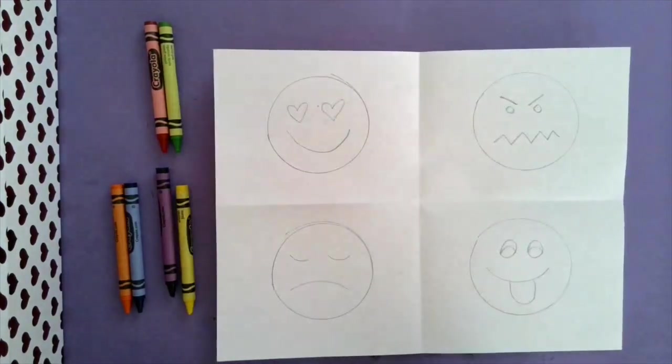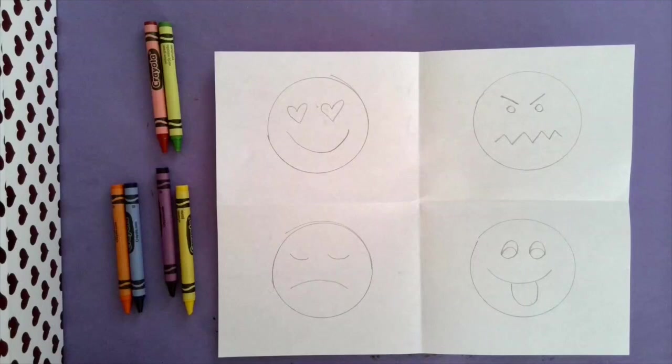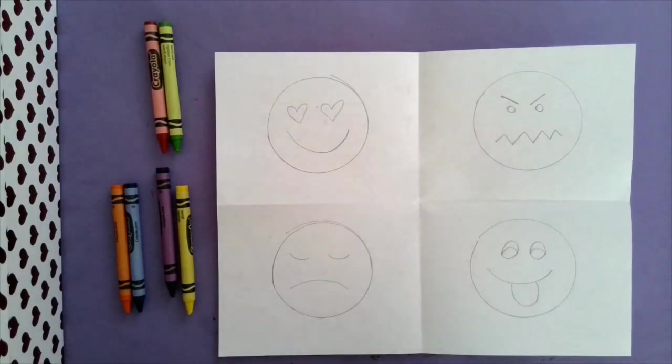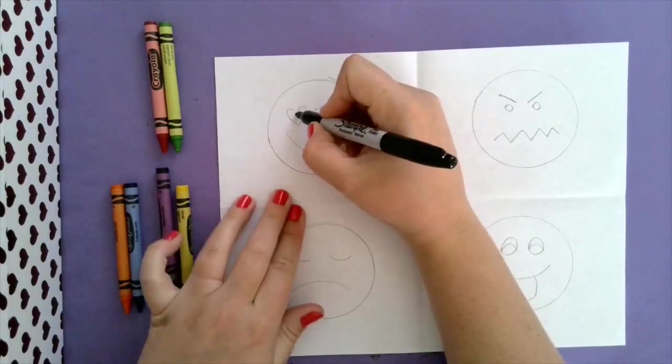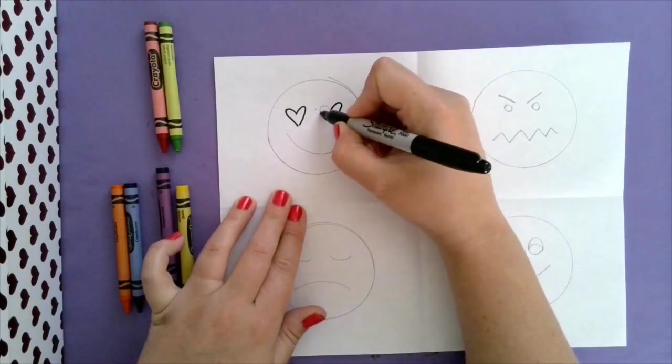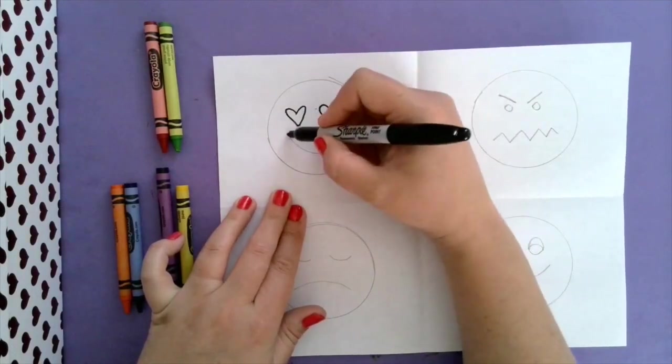Okay so now let's start with our coloring. Before we color them in, if you have a sharpie, awesome. If not, don't worry about it. You can just use your pencil. But I'm going to go over mine with sharpie really quickly so I don't ruin my design and not be able to see it. Okay so now they're traced.